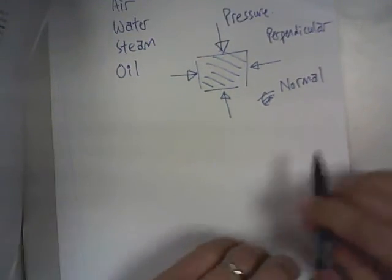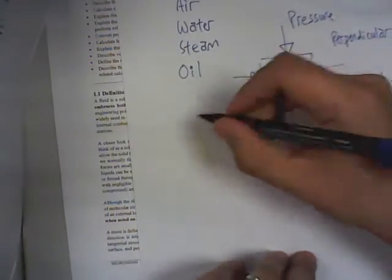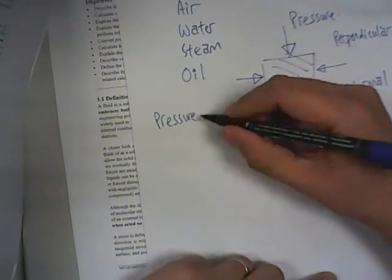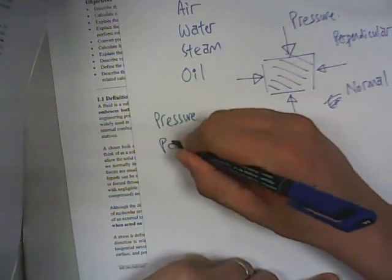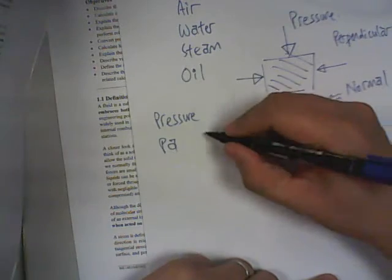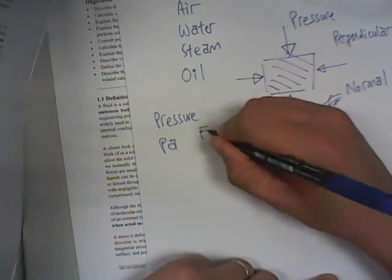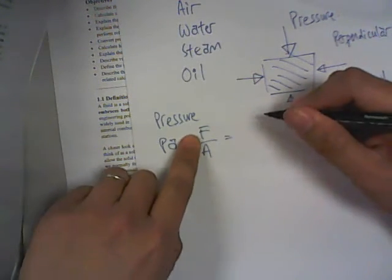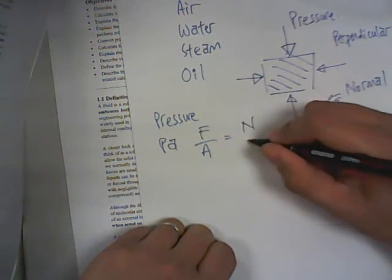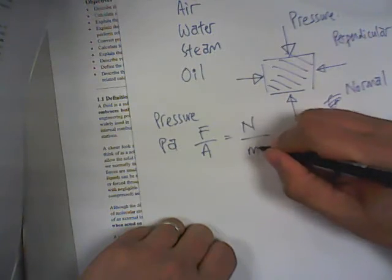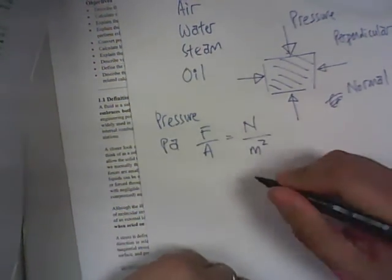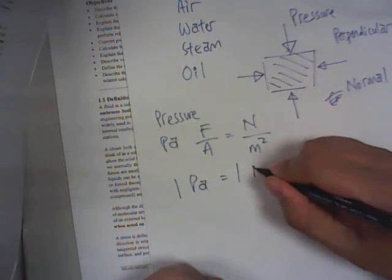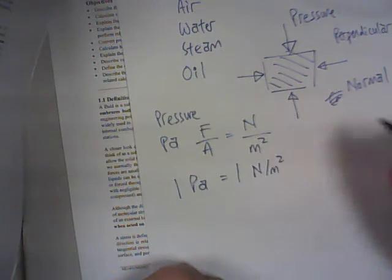This is your pressure. It acts perpendicular to the surface. Another engineering word commonly used is normal. Normal to the surface also means perpendicular to the surface. So pressure, the unit for pressure is Pascal. Pascal is basically force divided by area, the SI unit for force is Newton, area is meter square. So we can say that one Pascal is the same as one Newton per meter square.